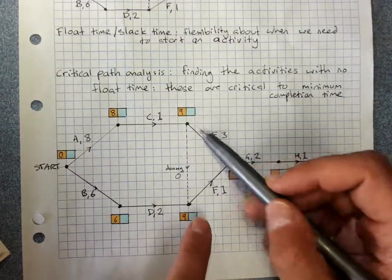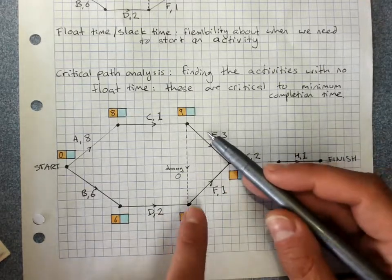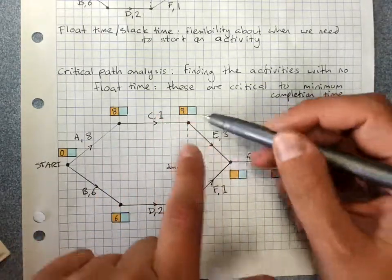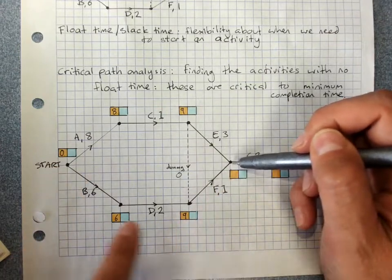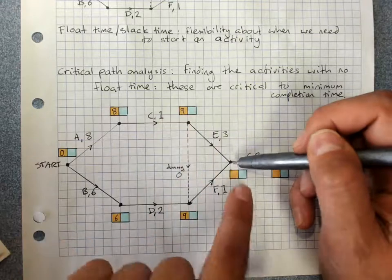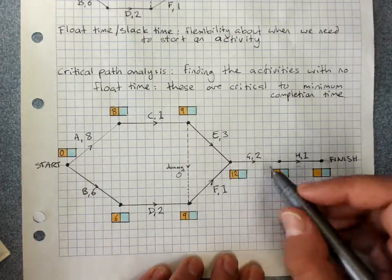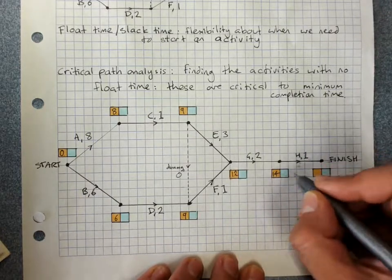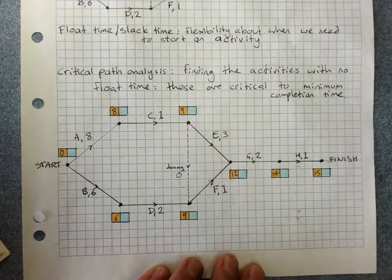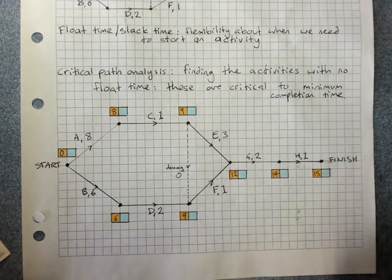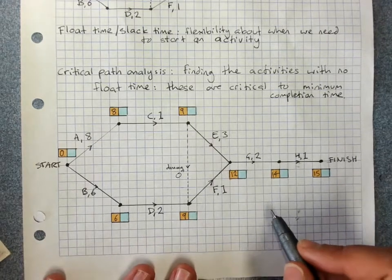Then, I need both E and F to be completed to start G. So I've got to, again, put the largest of the numbers. Nine plus three, I can start based on this path at 12. Whereas nine plus one, I could start based on that path at 10 hours. But no, I need them both to be done. So the earliest I can start G is at 12 hours in. Then it's straightforward. I need earliest for H is 14. One for H here. So the earliest I can finish this project. Oh, it's not hours. It's days. My bad. I'm sorry. It's days. It's 15 days. So the minimum completion time, 15 days for this project.